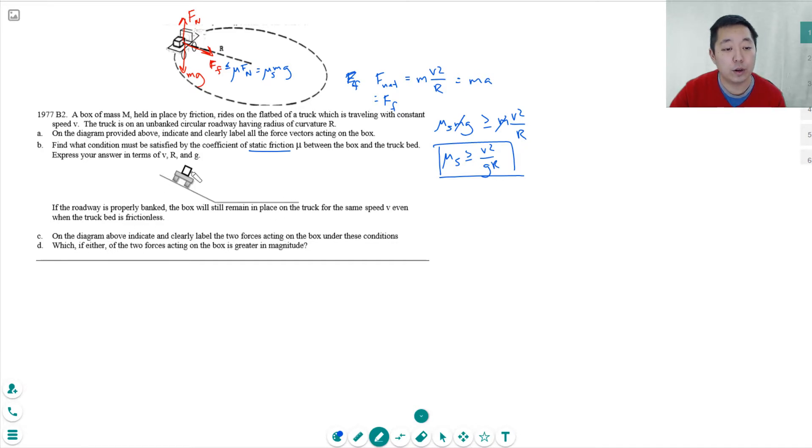So now we don't have any friction here. So this is mg. I have a normal force. And those are the only two forces because I don't have friction anymore on this.